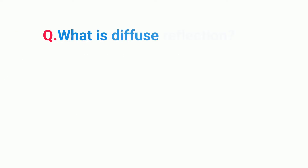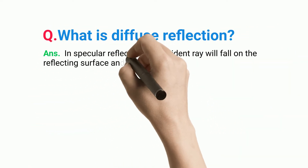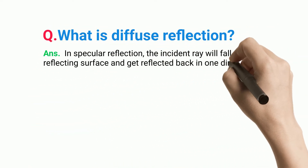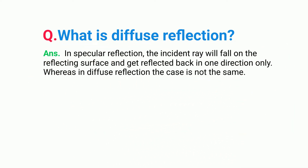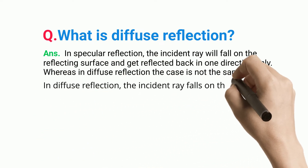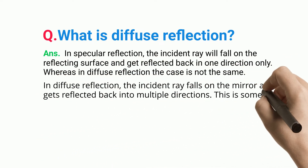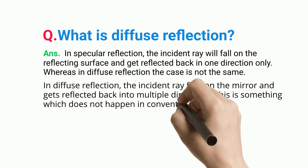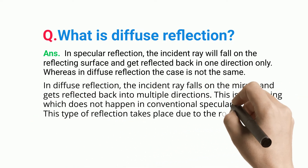What is diffuse reflection? In specular reflection, the incident ray will fall on the reflecting surface and get reflected back in one direction only. Whereas in diffuse reflection, the case is not the same. In diffuse reflection, the incident ray falls on the mirror and gets reflected back into multiple directions. This is something which does not happen in conventional specular reflection.